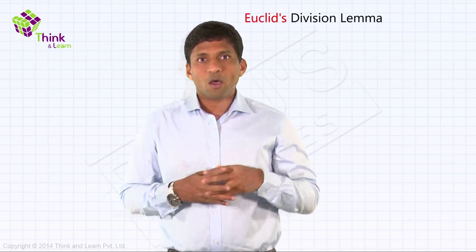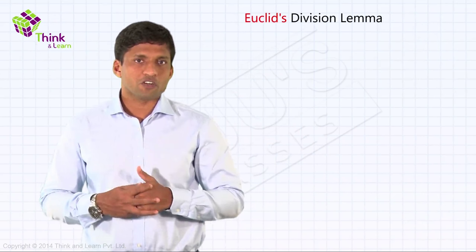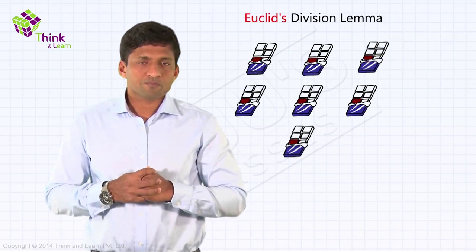To understand this division or this division lemma, let's look at a real life example first. Let's assume that there are seven chocolates. Take three at a time and put it into boxes.